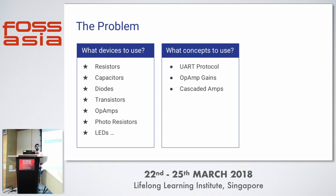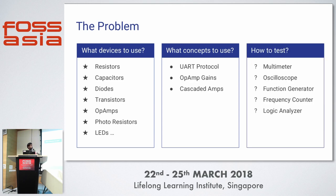We needed to build a UART transceiver, so we needed to understand the UART protocol — how to transmit a signal by blinking an LED according to the bit stream. We needed to know how to calculate op-amp gains and design comparator circuits, then cascade them to get the final output. Once the circuit was built, we thought about how to test it. We figured we'd need a multimeter to measure voltages at different stages in the circuit.